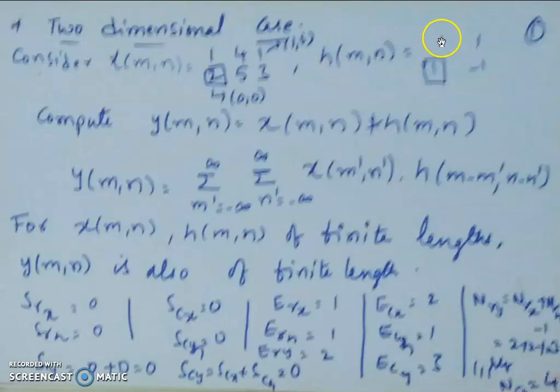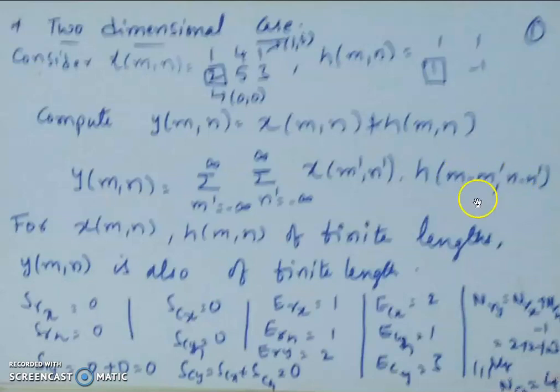h(m,n) is equal to 1,1,1,-1, which is zero at 1. Now, to compute y(m,n), we need to compute the convolution between x(m,n) and h(m,n). y(m,n) is equal to summation over m' from minus infinity to infinity, summation over n' from minus infinity to infinity, of x(m',n') multiplied with h(m-m', n-n'). Here, both x(m,n) and h(m,n) are finite length signals, so y(m,n) will also have finite length.